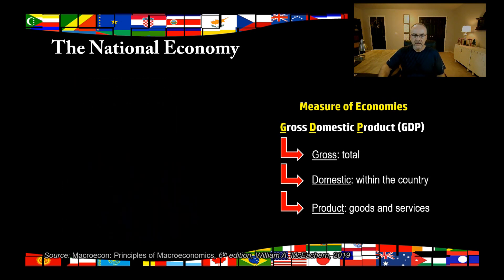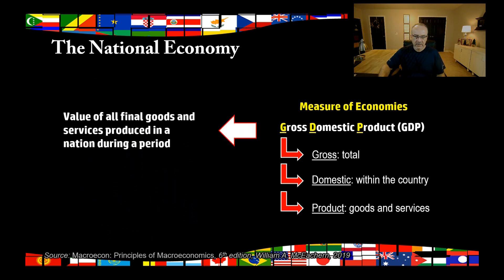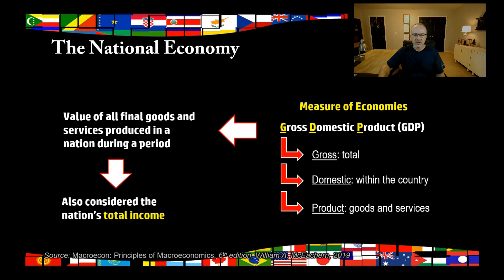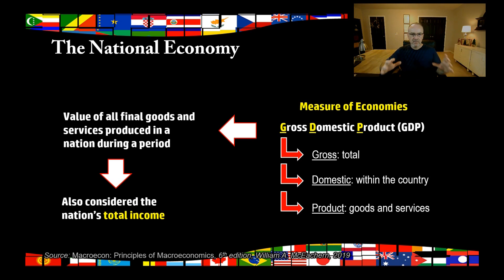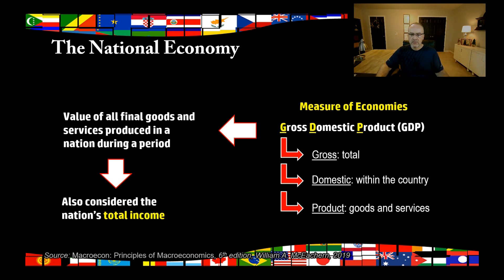So gross domestic product — the formal definition is the value of all final goods and services produced in a nation during a period. It's also considered the nation's total income. So gross domestic product is all the products and services that we produce in the nation in one year, and that's also considered the national income — the amount of money the whole nation makes when you add up all the people and companies working. The assumption is that whatever you made, you sold, and whatever you sold became your income.